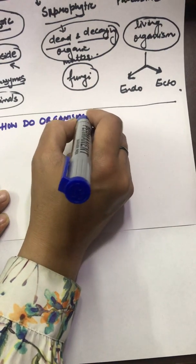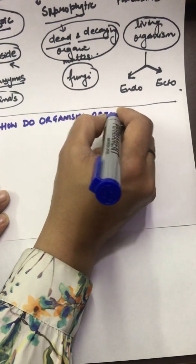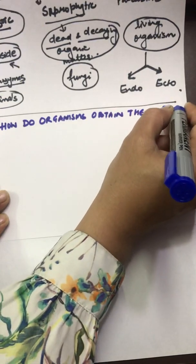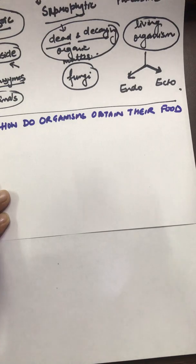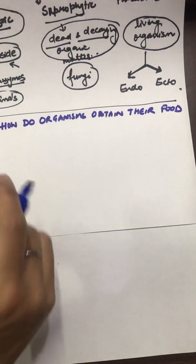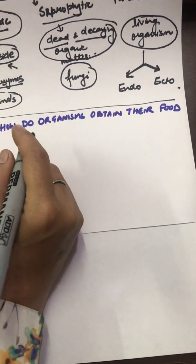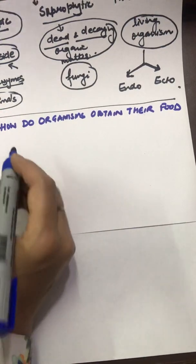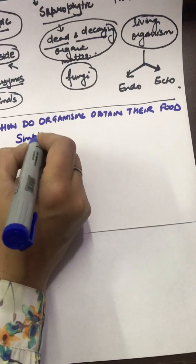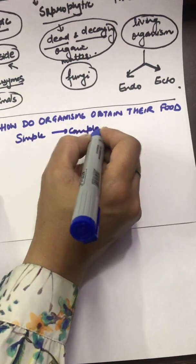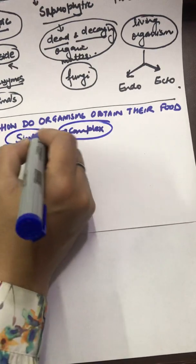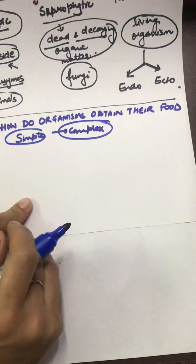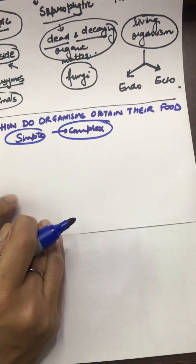Organs obtain their food differently across organisms. In single-celled ones, food is taken by the entire surface — as we see in amoeba — but as organisms move from simple to complex categories, different parts become specialized to perform different functions. We are now taking up the process of nutrition in amoeba.